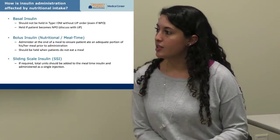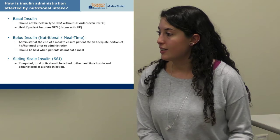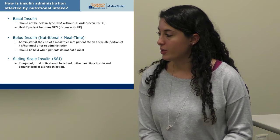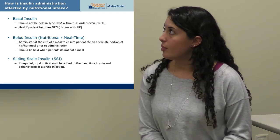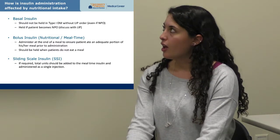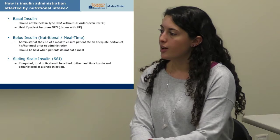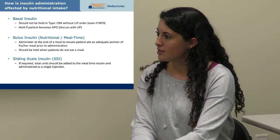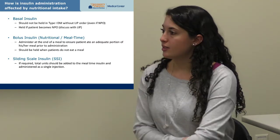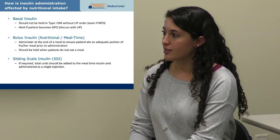For basal insulin, if you have a Type 1 diabetic, it's important not to hold it even if they're not eating, because they have no insulin production of their own. For a Type 2 diabetic who has some endogenous insulin, you'll need to discuss with the LIP on a patient-by-patient basis whether to continue basal insulin if the patient is NPO. Sometimes those patients would be managed with a shorter-acting insulin instead.